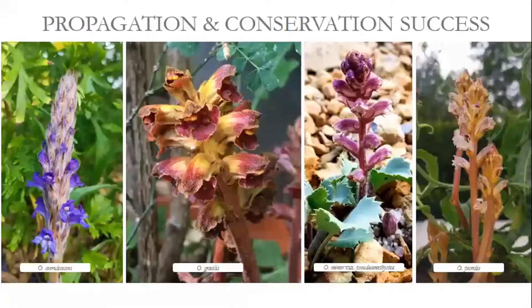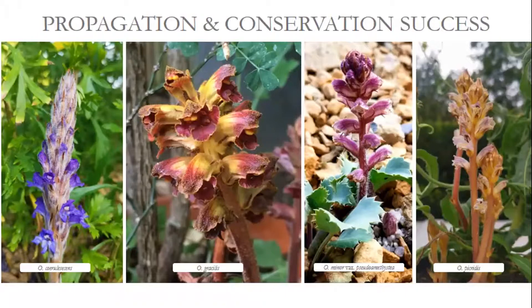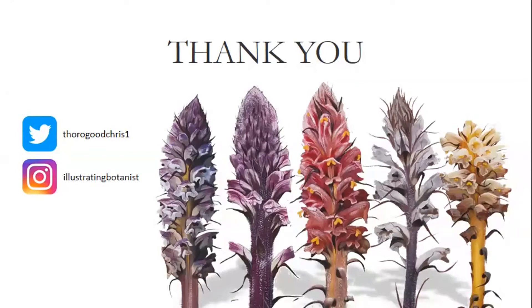Many broomrapes are rare or of conservation concern and are often neglected in botanic garden conservation efforts because they're perceived as difficult or impossible to grow. We've actually had some success stories: on the left is a beautiful blue specimen of Orobanche kirilovii collected from Honshu, Japan; then Orobanche gracilis growing at the University of Bristol Botanic Garden; and on the right, two plants that flowered this year at Oxford — a rare form of Orobanche minor and Orobanche picridis. These plants can be grown, giving us hope for conserving species that are rare or threatened in the wild.